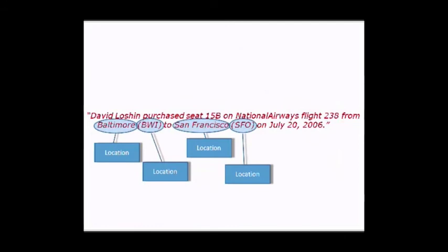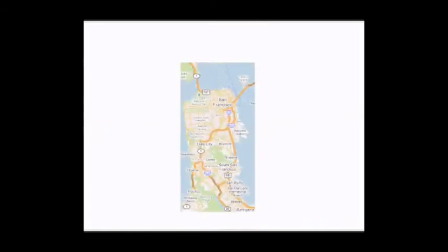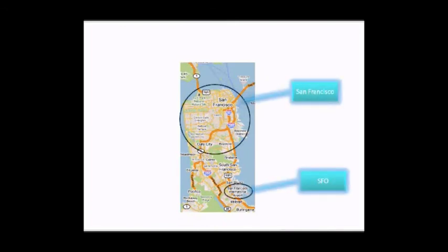I mentioned earlier about some curiosities about the names of the locations used in the transaction, and the fact that the locations are seemingly duplicated in the description. The intention is that the pairs of location references refer to the same place, but this is a semantic trick. In fact, SFO refers to an airport serving the San Francisco area, but it's not located in San Francisco. San Francisco is a city served by SFO, but one still needs to drive a bit from SFO to be in San Francisco.